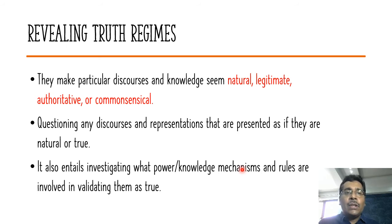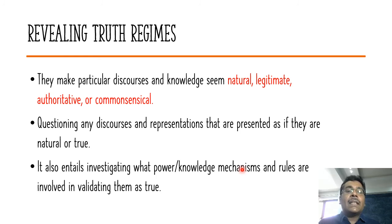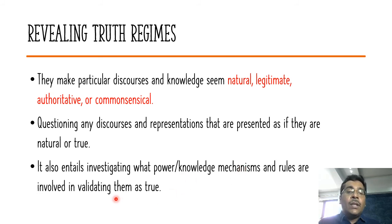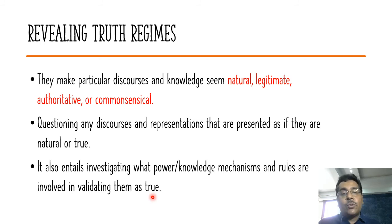The sixth important task is finding out which discourses and knowledges appear natural, legitimate, authoritative, or commonsensical. When representations appear as if they are natural and true and we do not question them, we fail to investigate the power and knowledge mechanisms involved in validating them. They are not natural in the natural sense — power relations have led them to be recognized as natural or commonsensical.